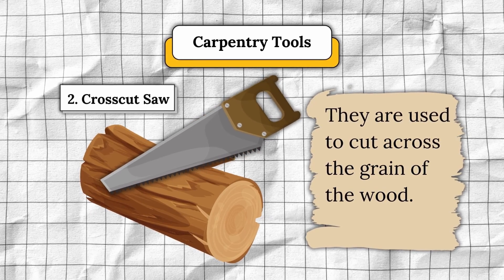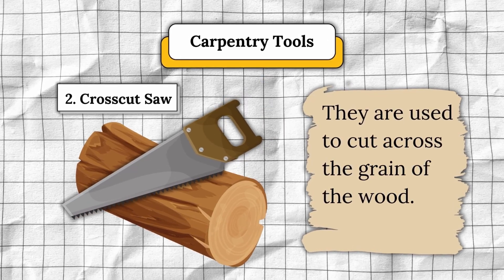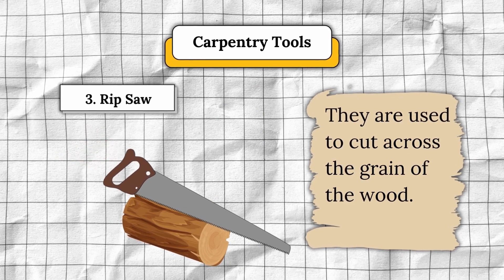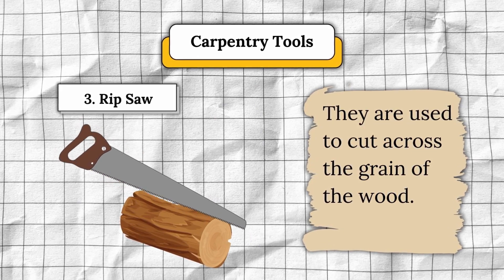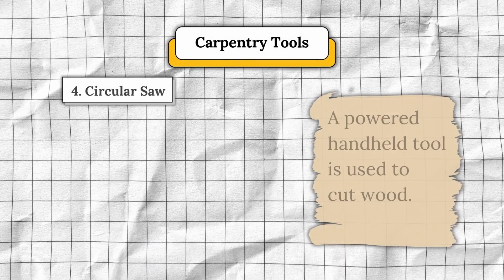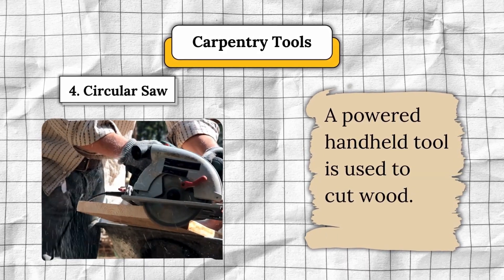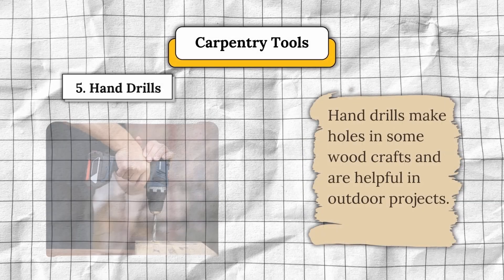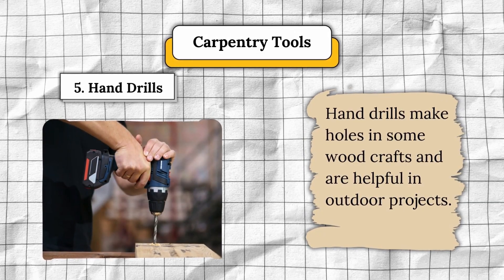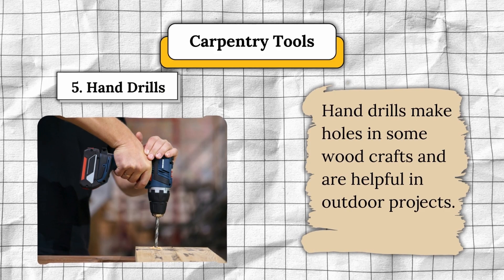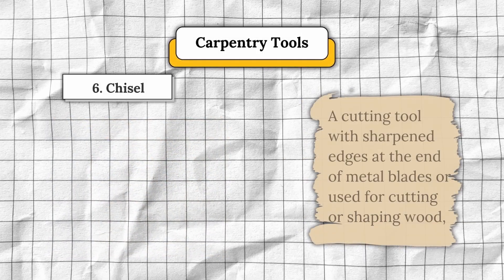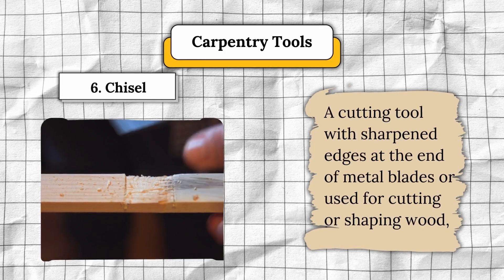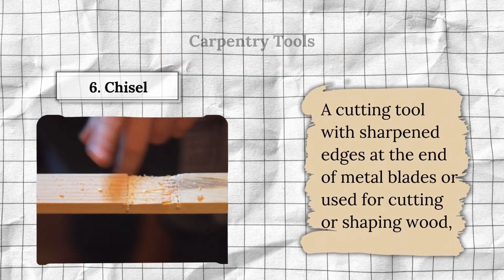Number two, crosscut saw — used to cut across the grain of the wood. Number three, rip saw — used to cut along the grain of the wood. Number four, circular saw — a powered handheld tool used to cut wood. Number five, hand drills — make holes in wood crafts and are helpful in outdoor projects. Number six, chisel — a cutting tool with sharpened edges at the end of metal blades, used for cutting or shaping wood grain.